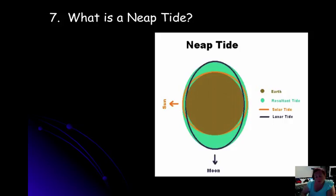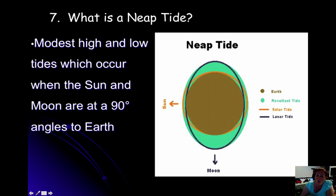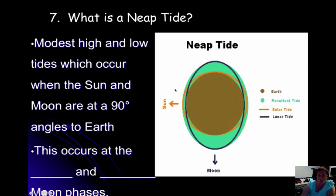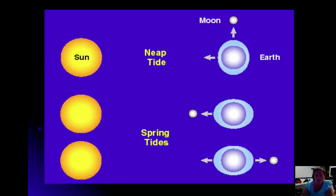A neap tide is a much less exaggerated tide. It's when we have the 90 degree angles. There's two times when we have 90 degree angles. We end up with very average high tides and low tides. And this is when we're at 90 degree angles, which occurs at our first quarter and third quarter positions. This is just another picture depicting our neap tide. The spring tide would be at our 90 degree angle positions at first quarter and third quarter. And your spring tides will be at the new Moon phase and the full Moon phase when everything's lined up.